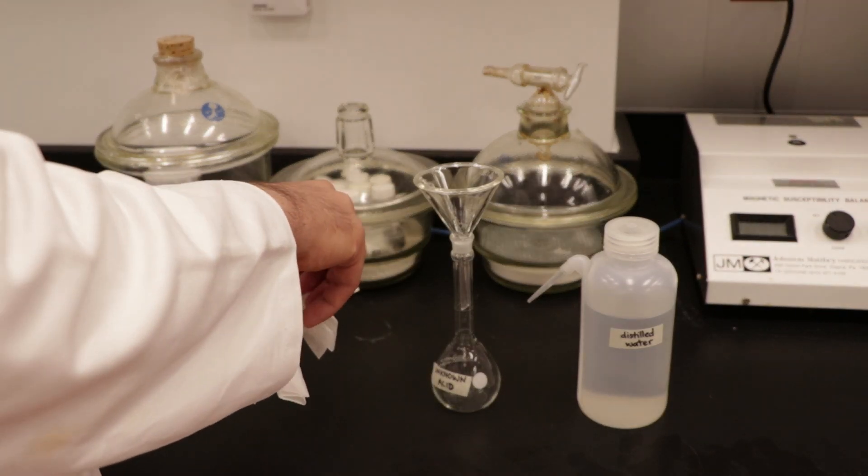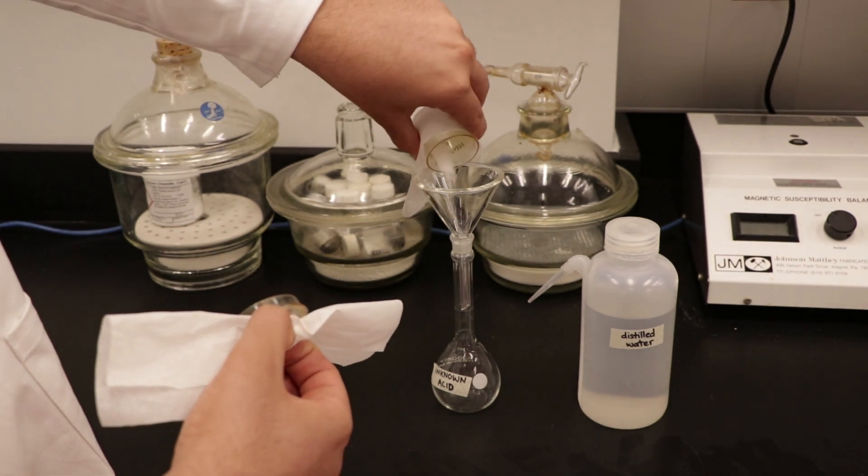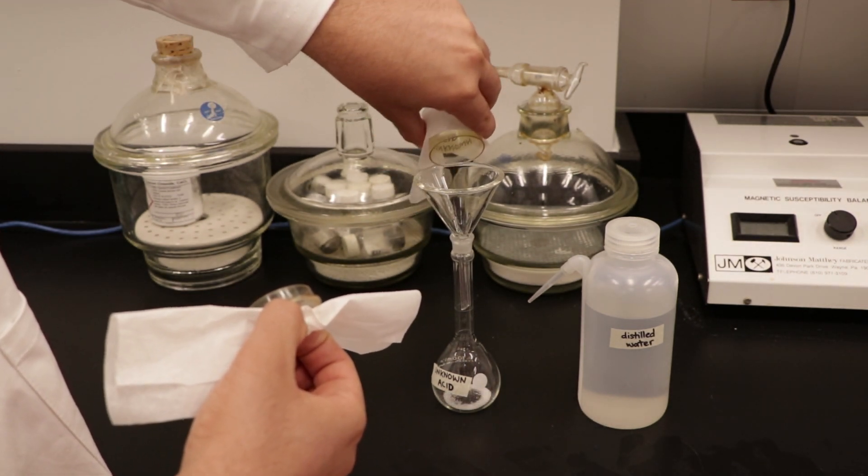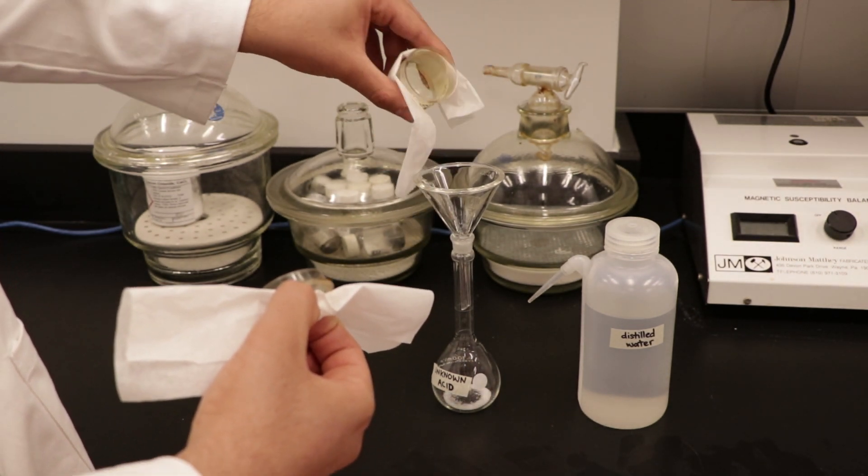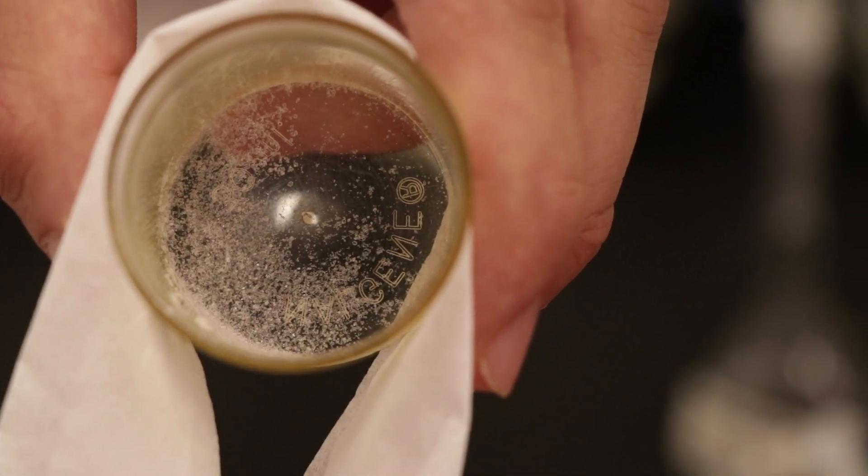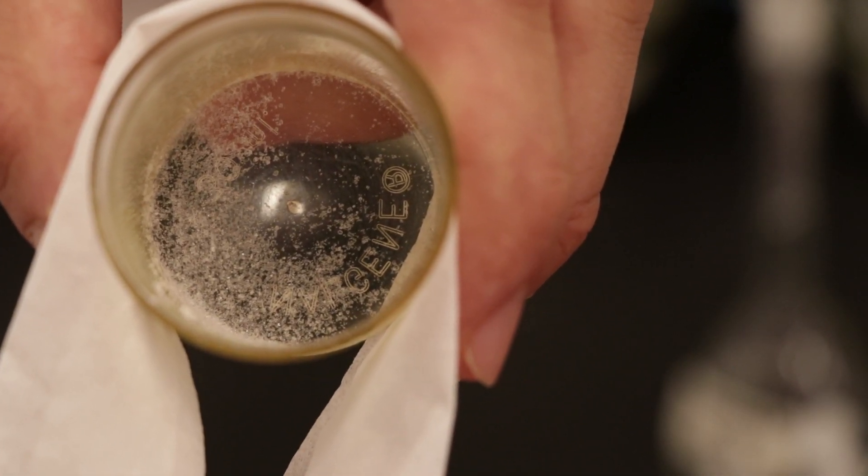Transfer the unknown acid into the volumetric flask. You may notice that not all of the powder will transfer into the flask and this is okay. The important thing is that you know exactly how much acid you have transferred into the volumetric flask.